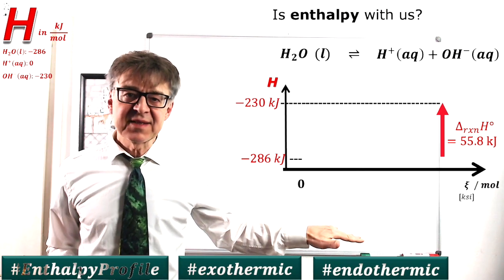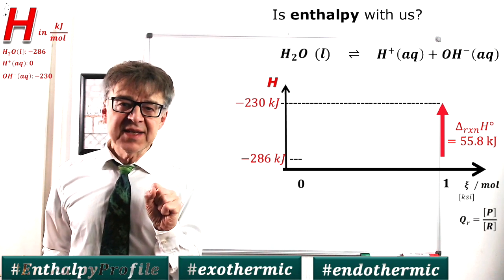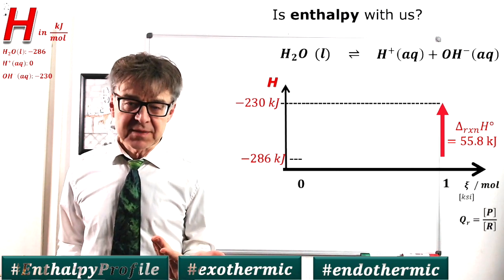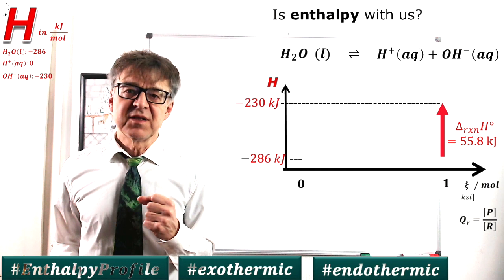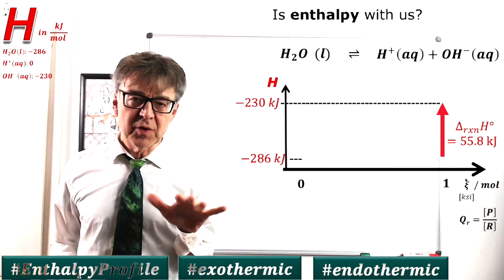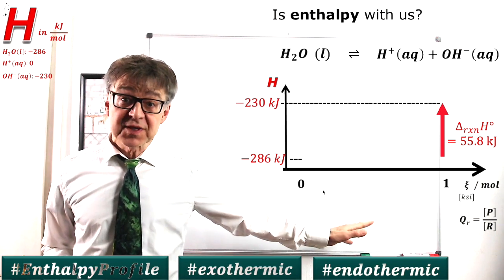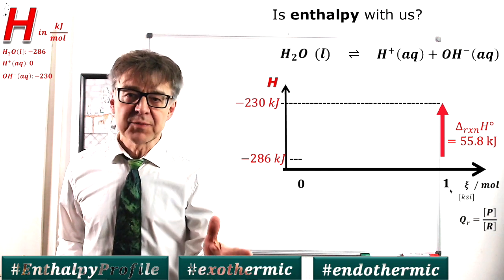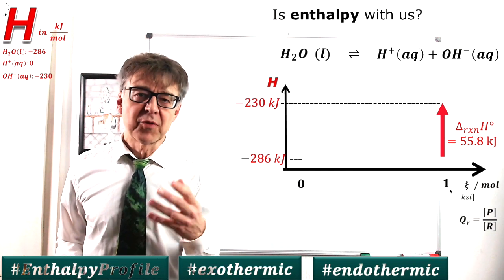On the x-axis, the chi indicates the reaction process. Chi equals 0 mole means pure reactants. Chi equals 1 mole means 100% conversion, pure products.